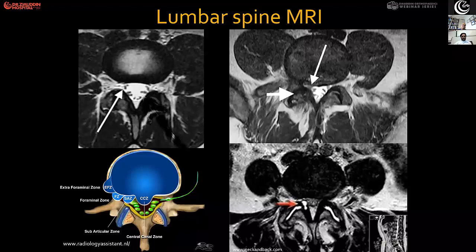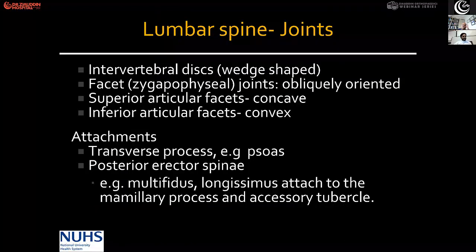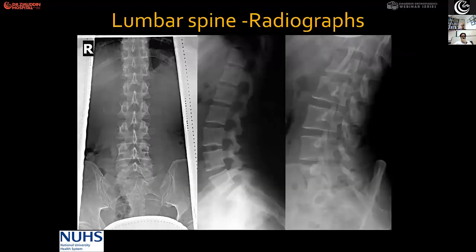The facet joints are called the zygoapophyseal joints. The superior facet is concave; the inferior facet is convex. The transverse processes are strong and large because they give attachment to the psoas muscle. On oblique radiograph, you cannot forget the Scotty dog appearance.